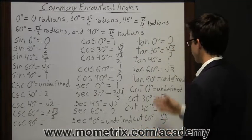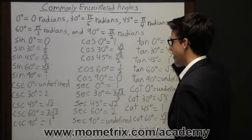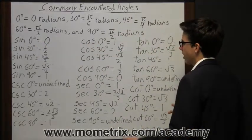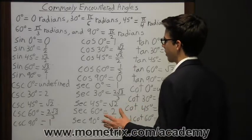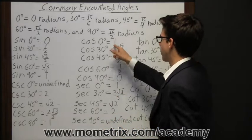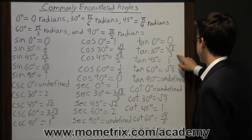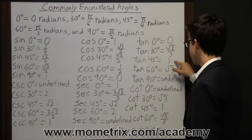Then we go to tangent. Tangent of 0 degrees is equal to 0. So notice here at the top we have 0 degrees all the way across, and the only one that has something, a value other than 0, is cosine where it's equal to 1. Then tangent of 30 degrees is square root of 3 over 3.